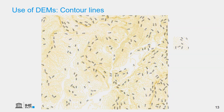Elevation data can also be visualized using contour lines, which can be derived from DEM rasters. Contour lines are formed by connecting locations with the same elevation, generated with a certain equidistance — the elevation difference between two lines. Here an equidistance of 50 meters is used. When lines are close together the area is very steep, and when they are further apart it gets less steep. We can also interpret the shapes of the landscape from a contour line map.